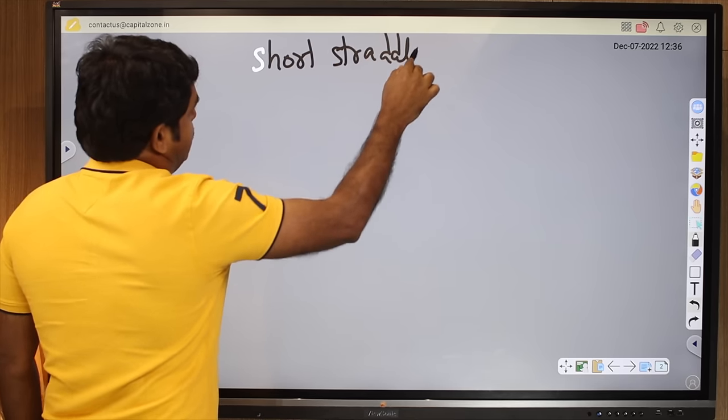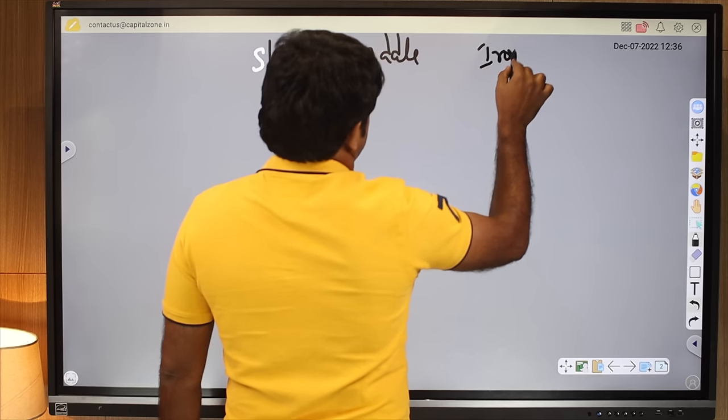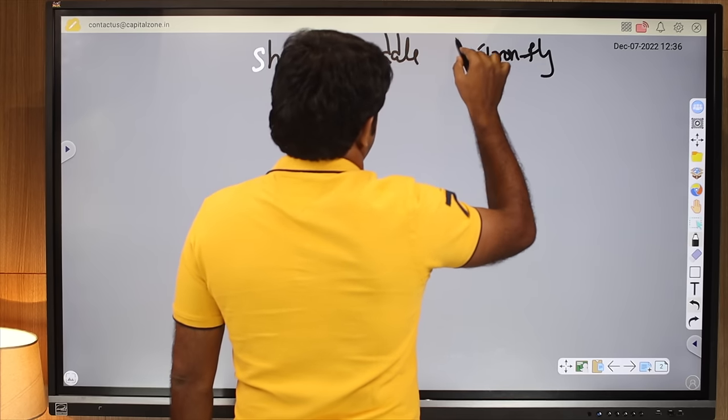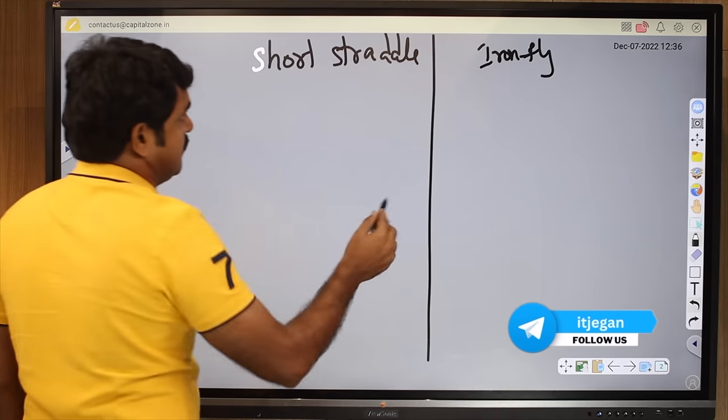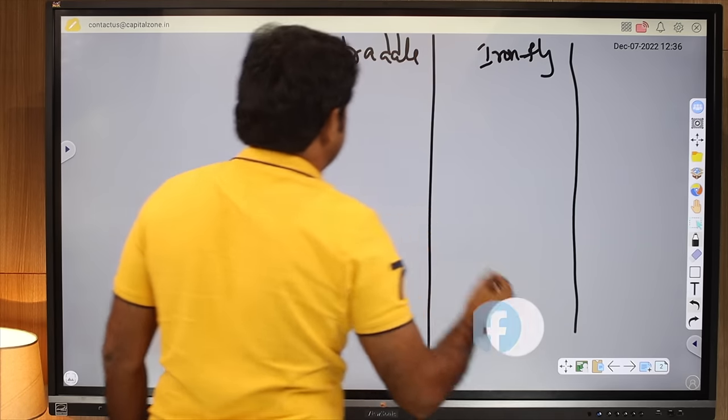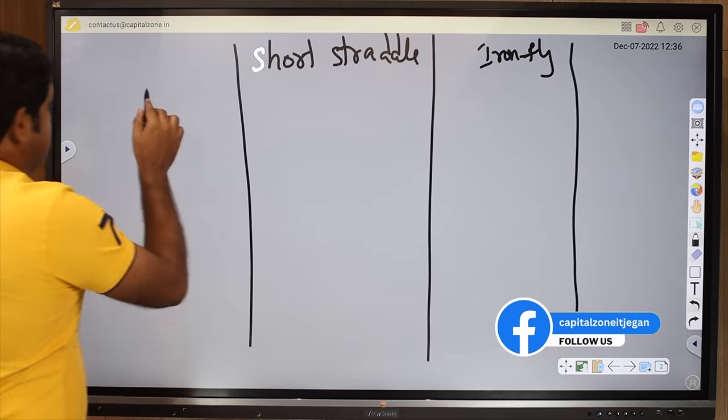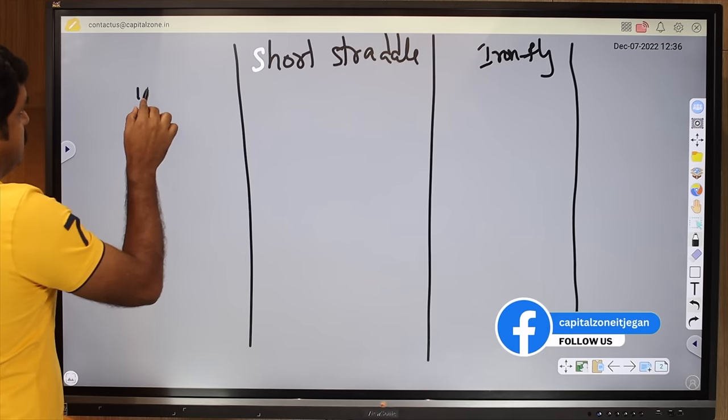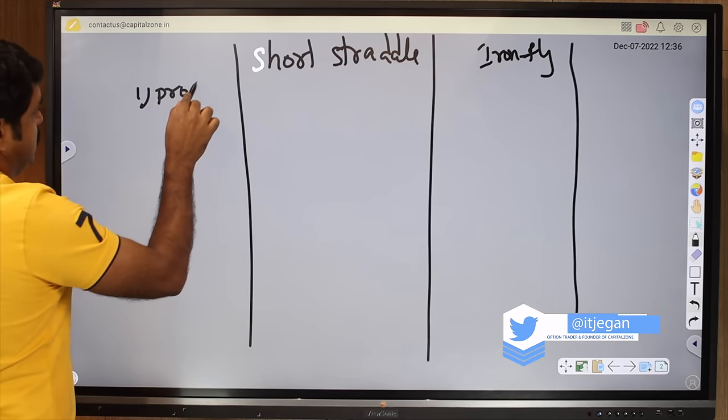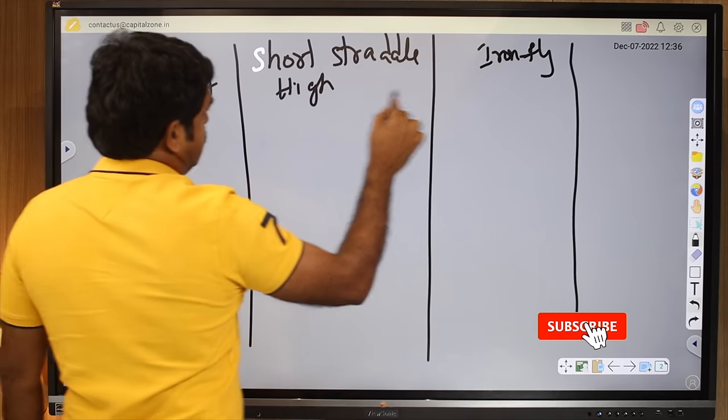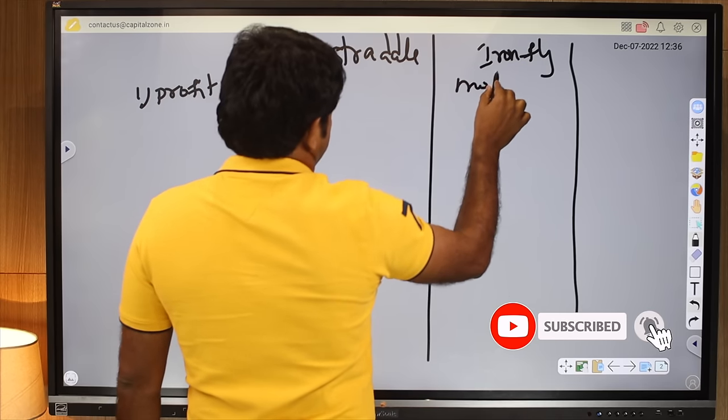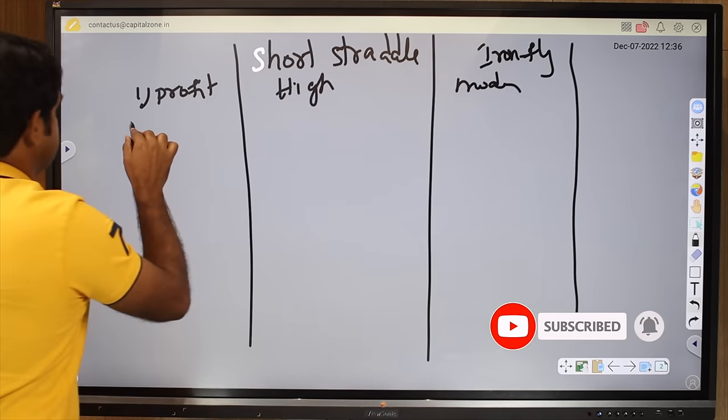Let's have short straddle here and iron fly. Number one: profit. Profit is high for short straddle, moderate for iron fly. Risk: very high here, risk is moderate for iron fly.